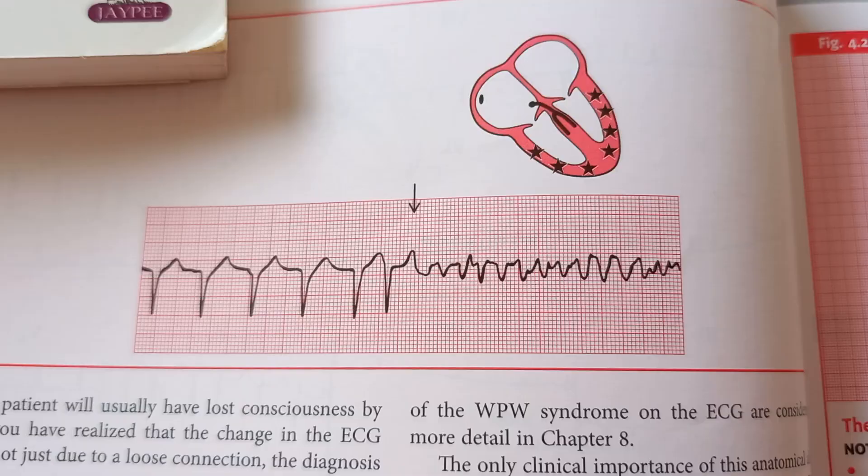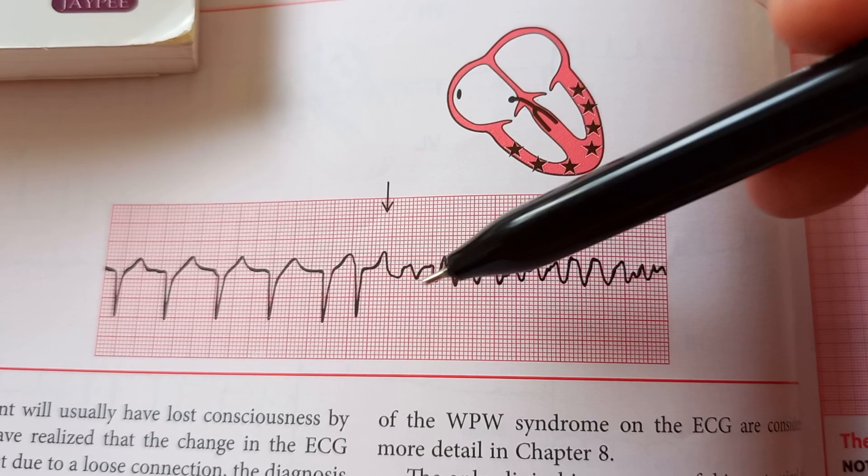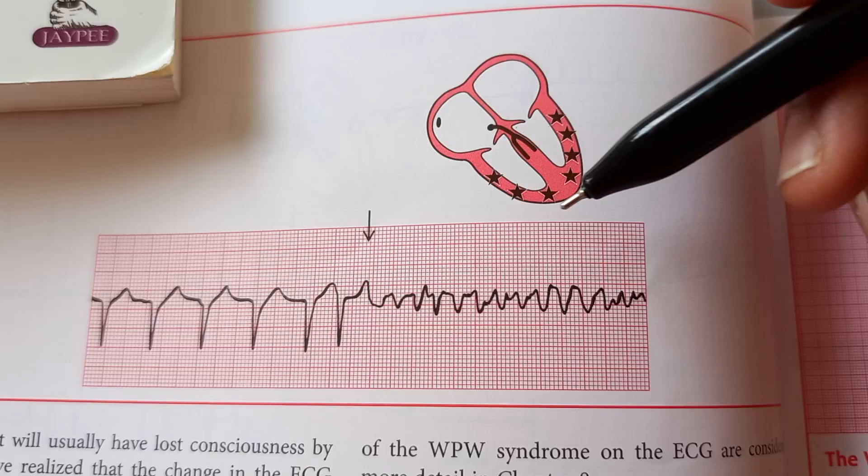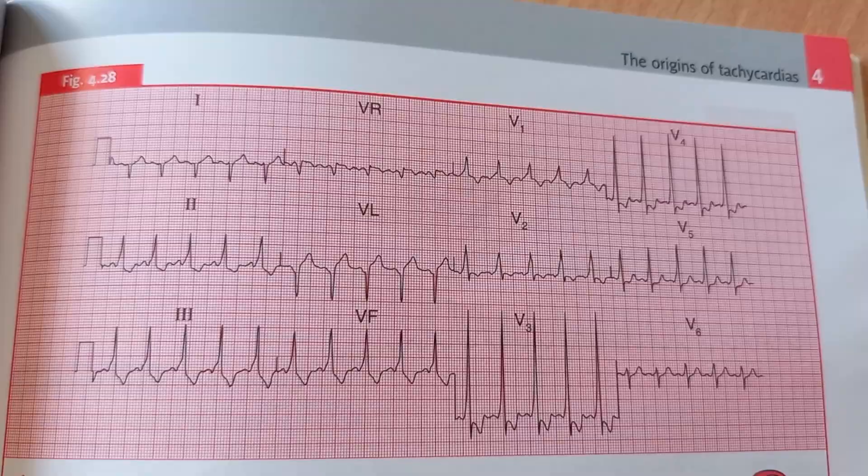What do you think is happening in this ECG? Look at the QRS, QRS, QRS, QRS. They have shown some stars here. Basically, this is ventricular fibrillation.